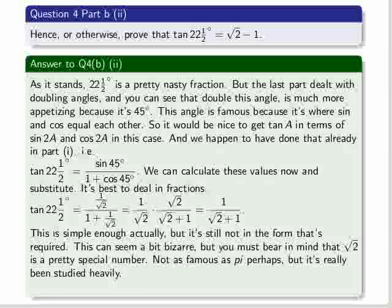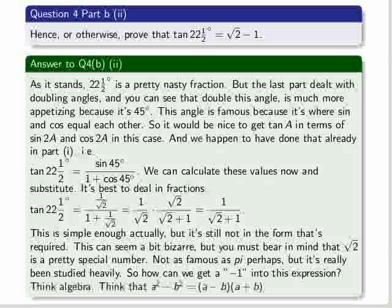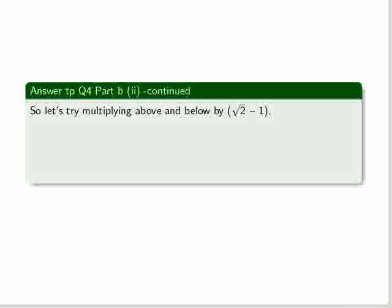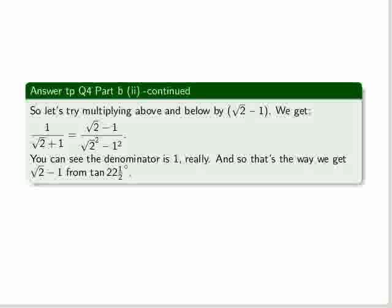Well, think algebra. Think that A squared minus B squared is equal to A minus B in brackets times A plus B in brackets. So let's try multiplying above and below by the square root of 2 minus 1. So we do that, and we find that the denominator actually turns out to be 1. So that's the way you can get the square root of 2 minus 1 from the tan of 22 and a half degrees.